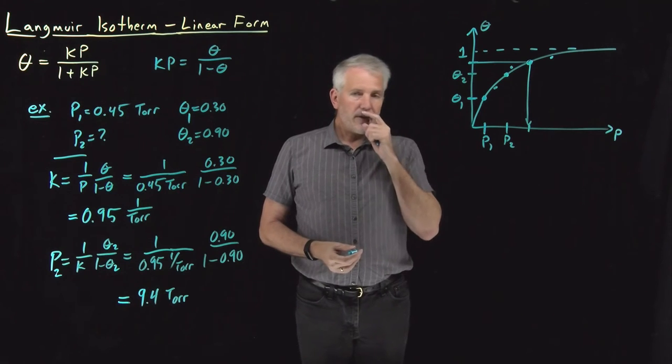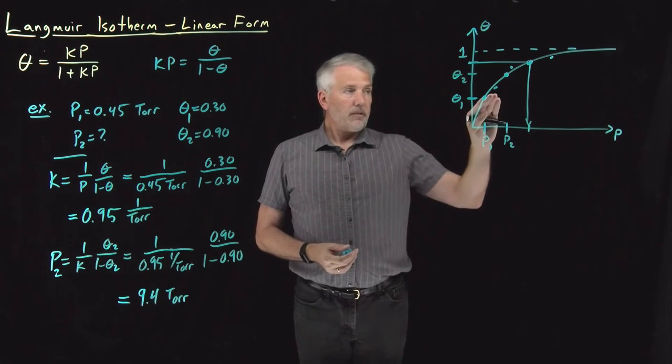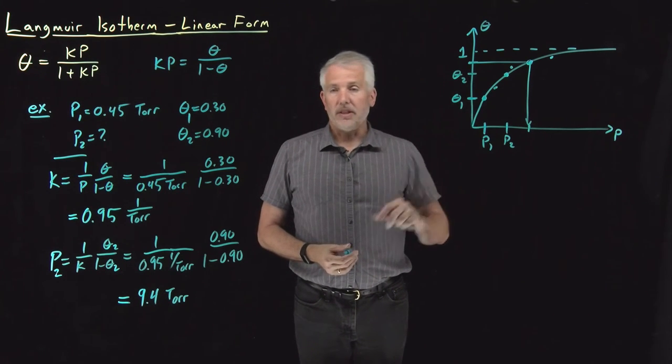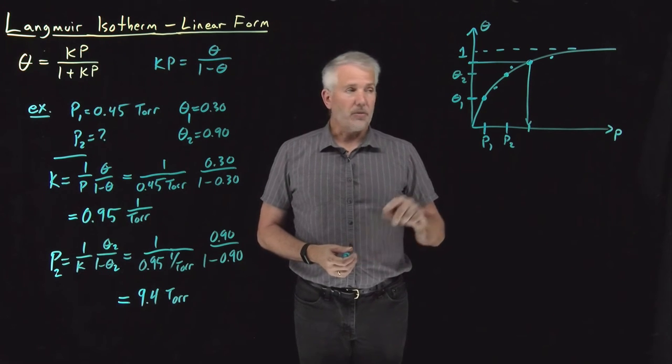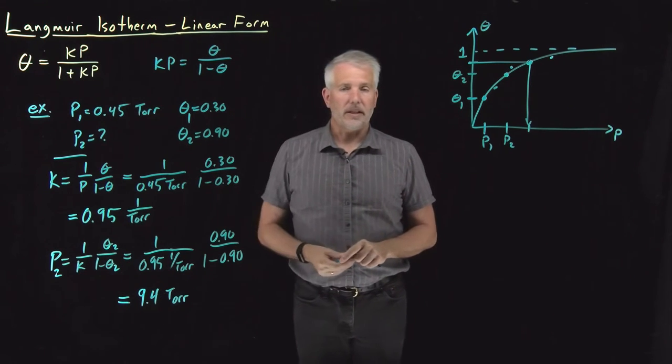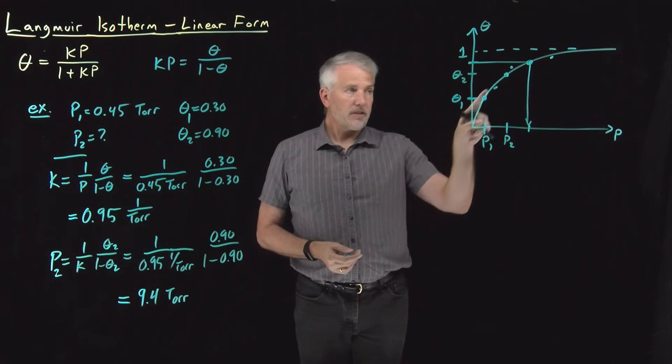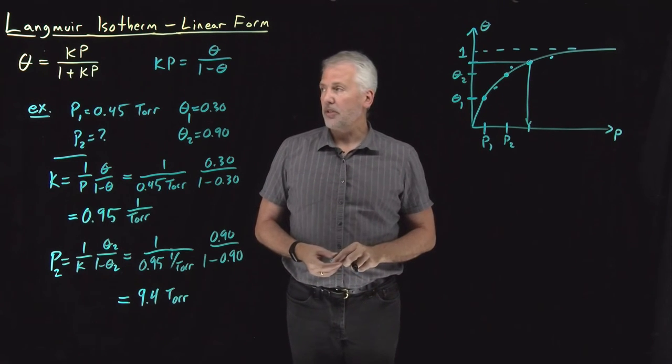And of course we could do a best fit curve using the Langmuir isotherm, but it's a little more convenient to do a best fit using least squares with a linear equation rather than a non-linear equation like this one. So it turns out we can make this graph linear if we rearrange it just slightly.